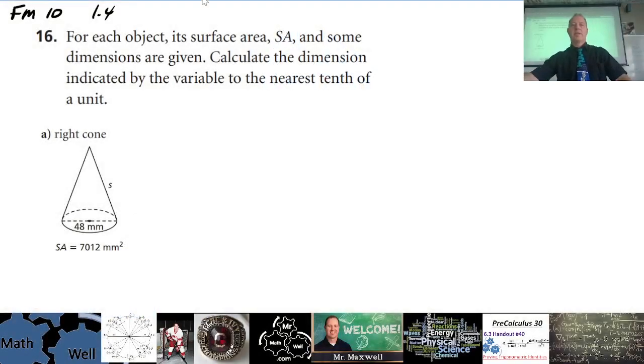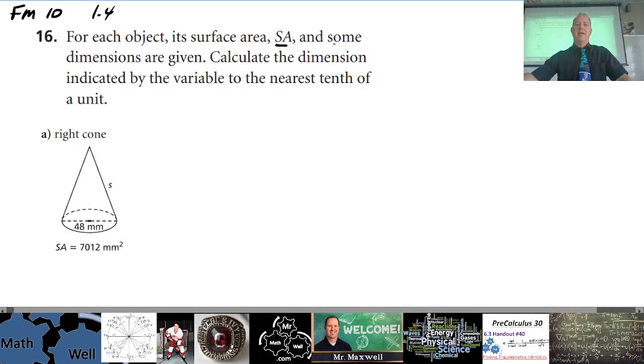Number 16 says for each object, its surface area SA and some dimensions are given. Calculate the dimension indicated by the variable. So we are looking for s, we don't know what s equals here in this diagram. Let's take a look at the formula for surface area for